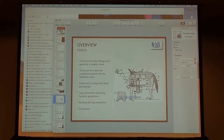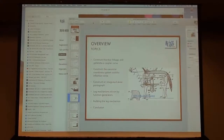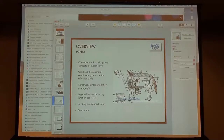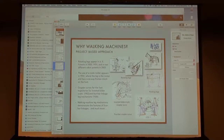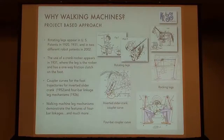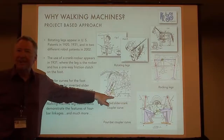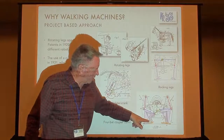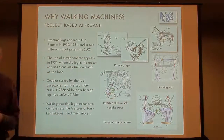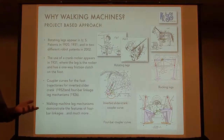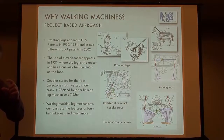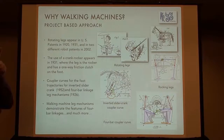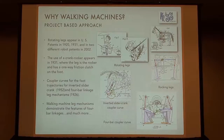A question from the audience: shouldn't the coupler curve be upside down? Correct. Look at all these coupler curves in the patent literature — upside down. Getting a coupler curve the shape you want is the entire question. And not only that, once you get the shape you want, how do you position it the way you want? The answer to the first question is curvature theory. The answer to the second question is the skew pantograph.